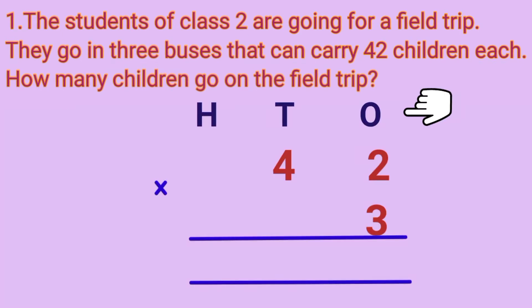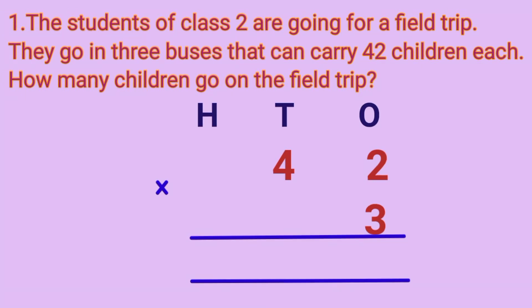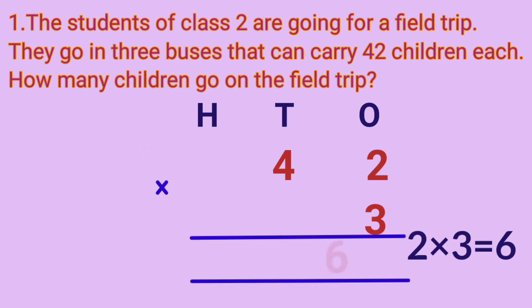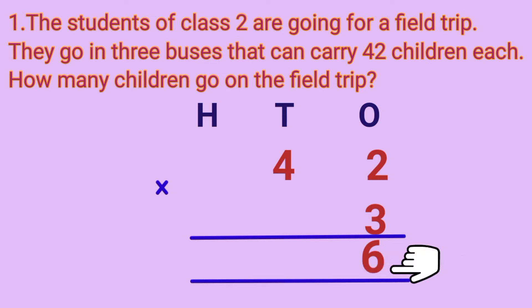First, multiply the ones place. 2 multiplied by 3 is equal to — what is the answer? Yes, 6. 2 threes are 6.